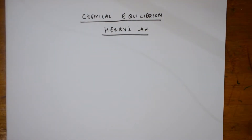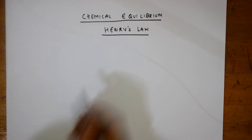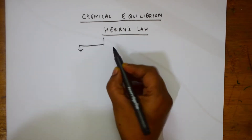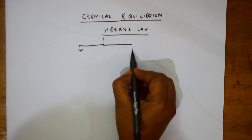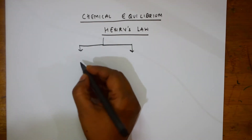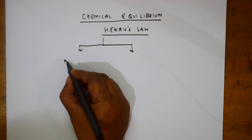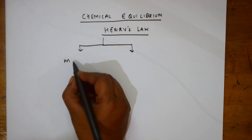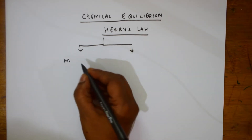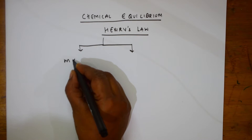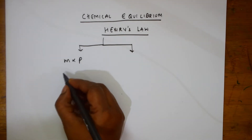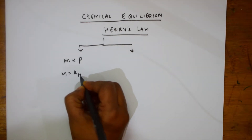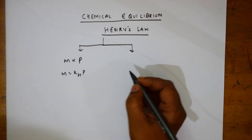Let us come back and learn the formula of Henry's law. Basically, whenever you are doing or solving numericals based on Henry's law, two formulas you need to remember. The first formula relates mass and pressure: mass is directly proportional to pressure. When we remove the proportionality constant, m is equal to kH times p.